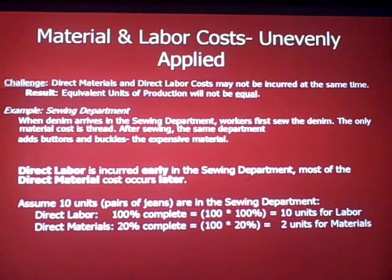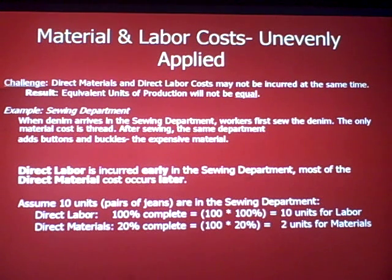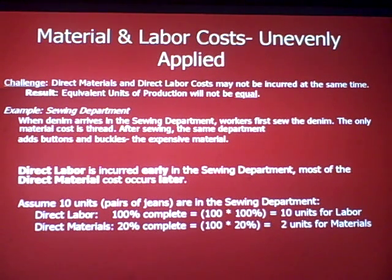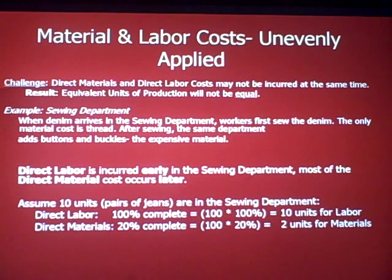Assume 10 pairs of jeans are in the sewing department. For direct labor, they're 100% complete: 10 times 100% gives us 10 equivalent units for labor. Direct materials are 20% complete: 10 times 20% gives us 2 units for direct materials. So we've figured out that labor and materials costs can be incurred at different times within the same department.